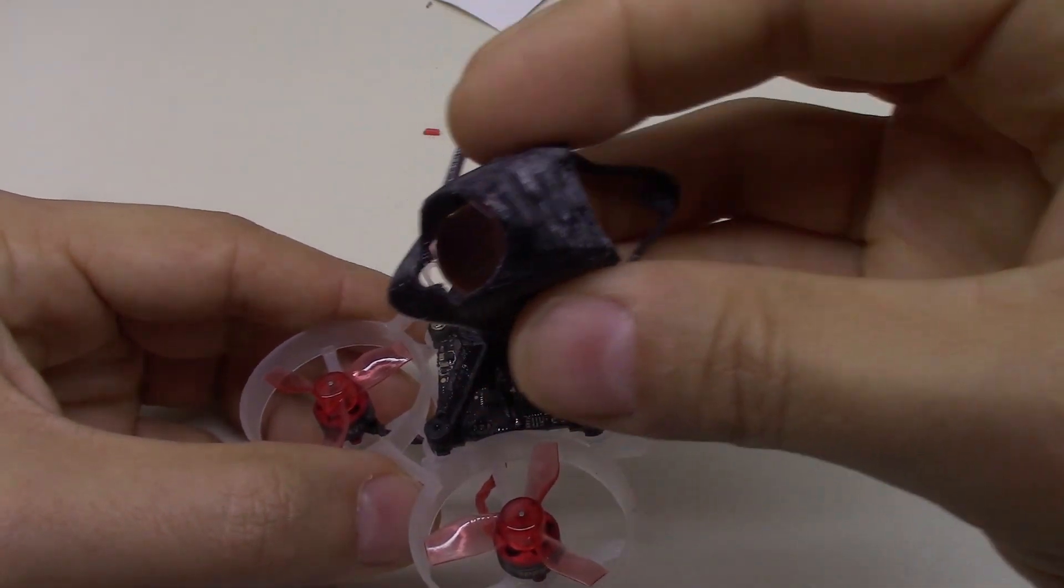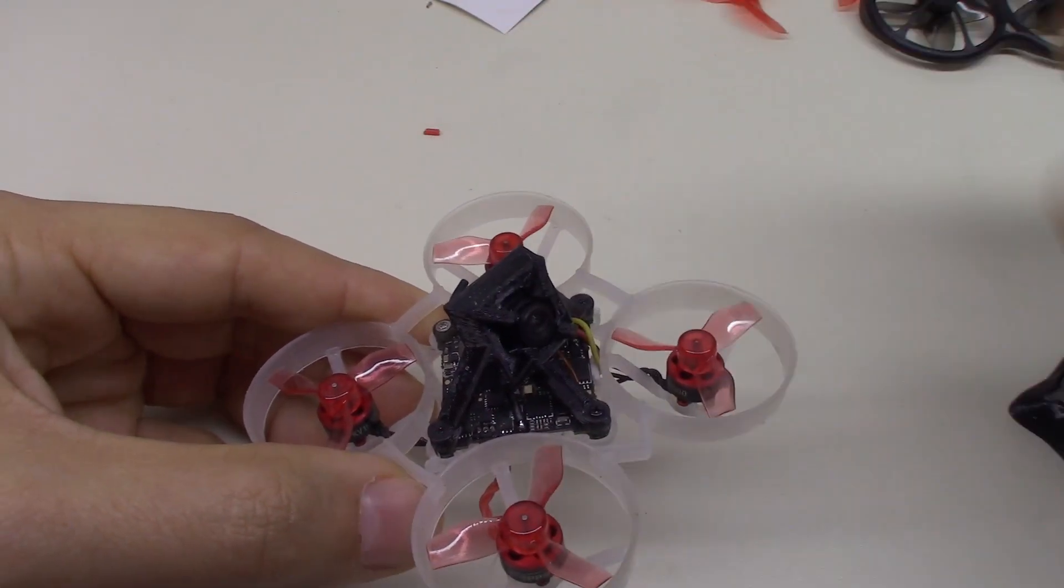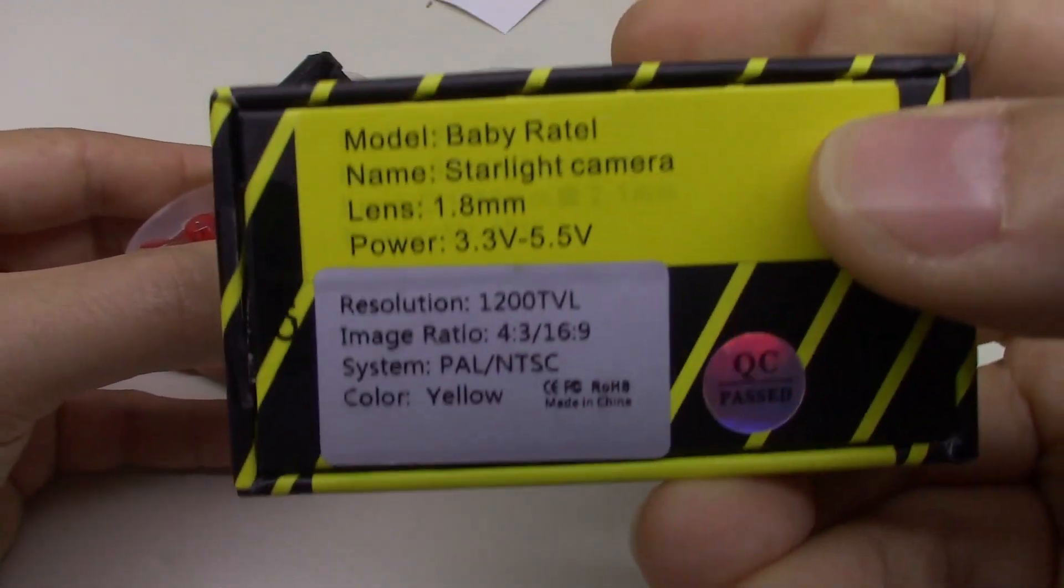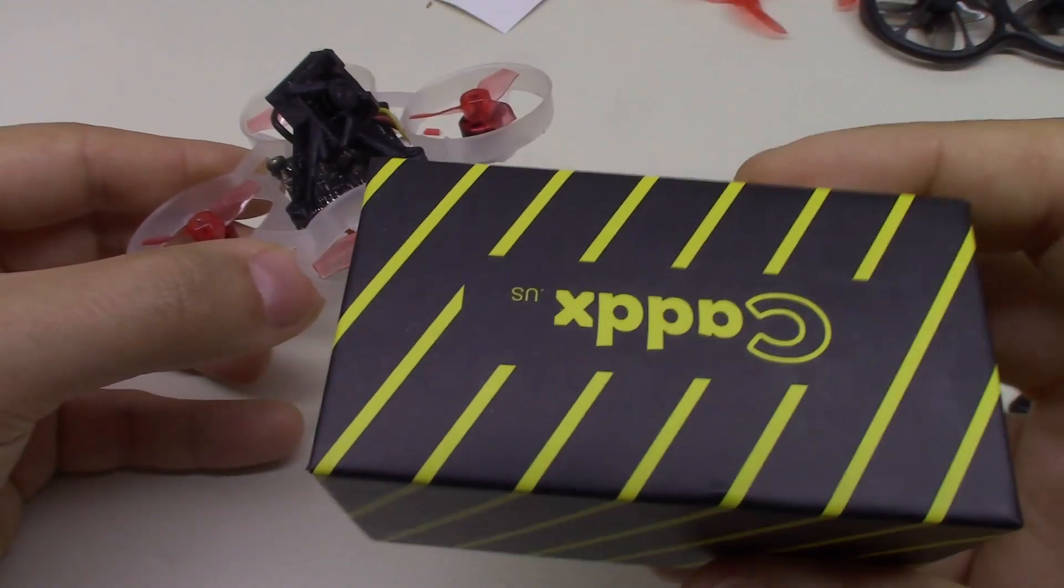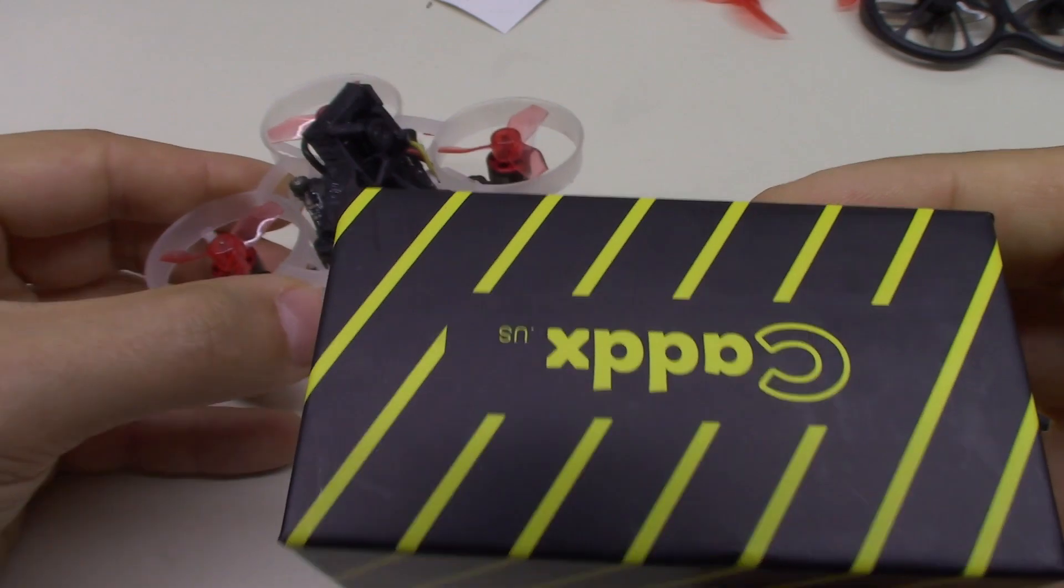So what I'm going to use is this 3D printed canopy that I've put on here, and then I also have a Caddx Baby Retel. In my opinion, this is the best nano cam that you can get right now.